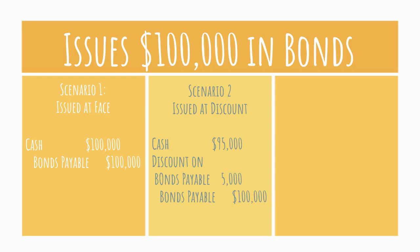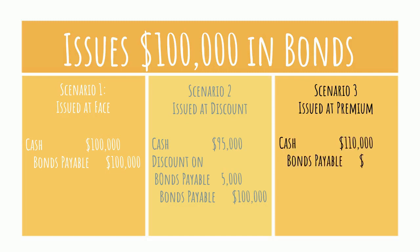The third scenario: the company could get more than $100,000. This would be issuing the bonds at a premium. The company would debit cash for the amount they received — let's assume $110,000 — credit bonds payable for $100,000, and credit premium on bonds payable for $10,000.